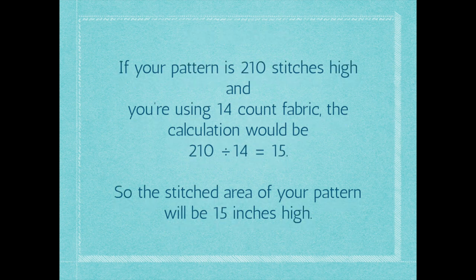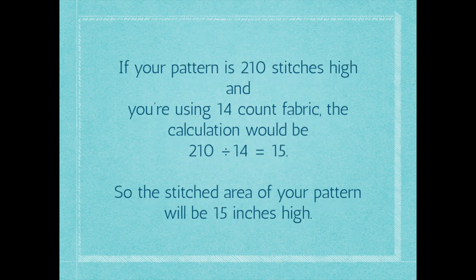Here's the same example for the height. If your pattern is 210 stitches high and you're using 14-count fabric, the calculation is: 210 stitches divided by 14 equals 15 inches. So the stitched area of your pattern will be 15 inches high. It's always your stitches divided by your fabric thread count equals the area.